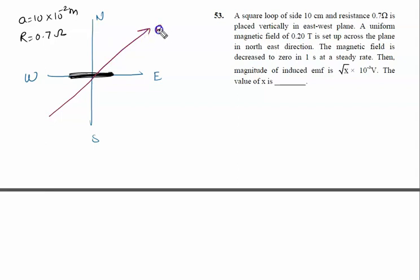The magnetic field is in the northeast direction with value 0.2 tesla. This angle must be 45 degrees and this angle must be 45 degrees, perfectly in the northeast plane.